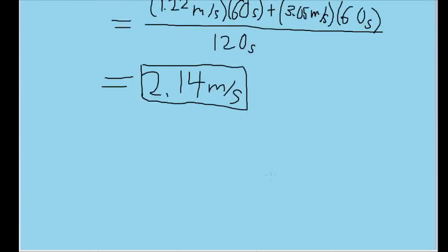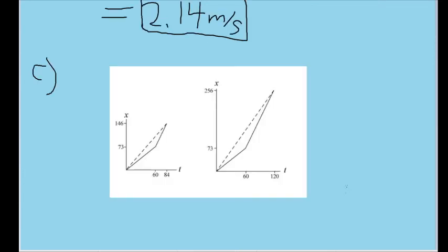In part C, the final part of the problem, we are asked to graph the change in position versus time for both cases, and in some way indicate how the average velocity would be found from such a graph. And here are the two graphs. The first one representing part A, and the second one representing the situation in part B. The solid lines represent the actual motion.